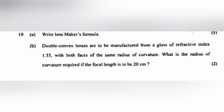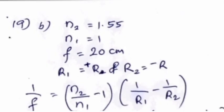What is the radius of curvature required if the focal length is to be 20 cm? N2 is equal to 1.55, N1 is equal to 1, F is equal to 20 cm. R1 is equal to plus R, R2 is equal to minus R.